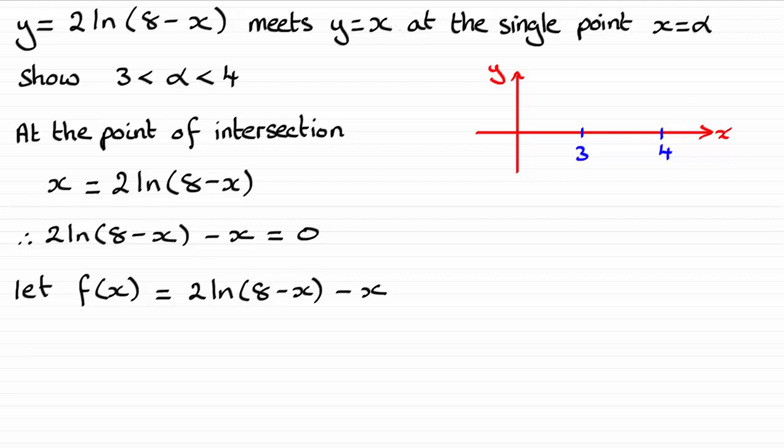So we now have to find out f of 3 and f of 4. If you put 3 as our x value into here, you're going to have 2 times the natural log of 5 minus 3. Work that out on your calculator and you'll find it comes out to a positive value, 0.2188 and so on.